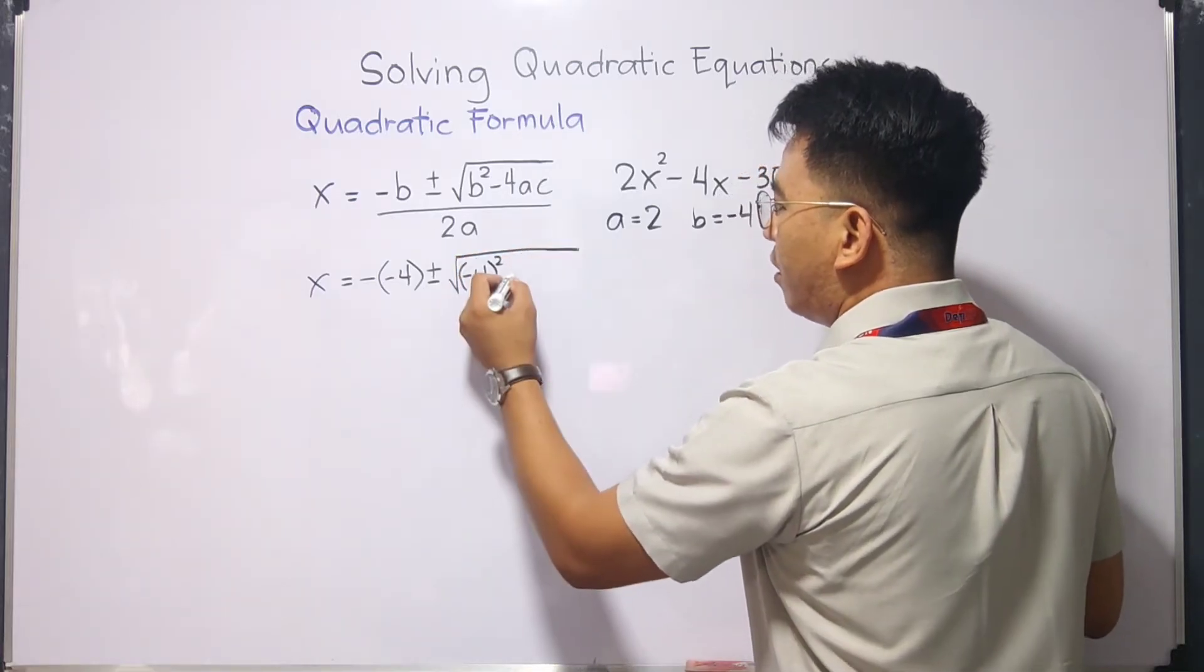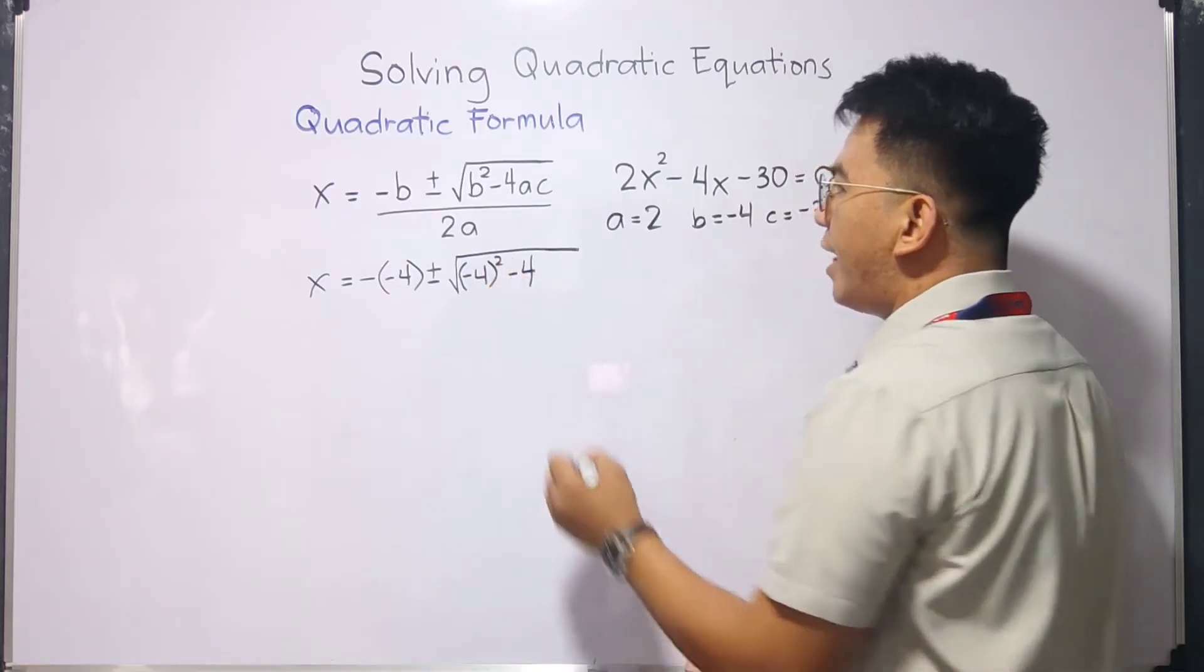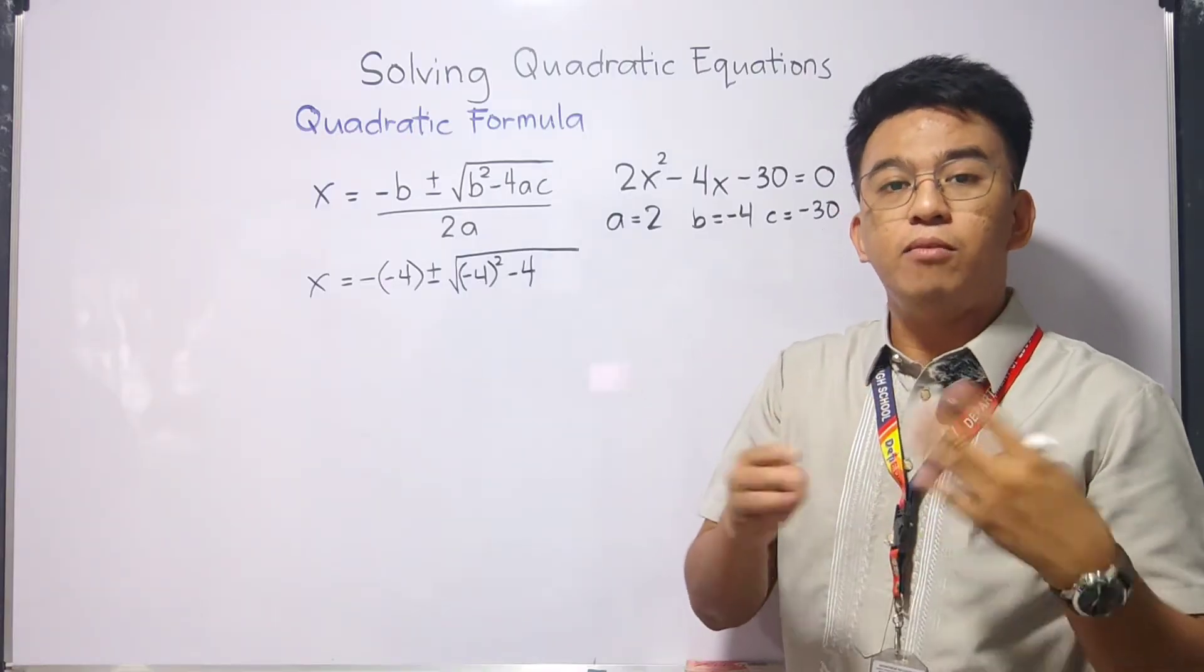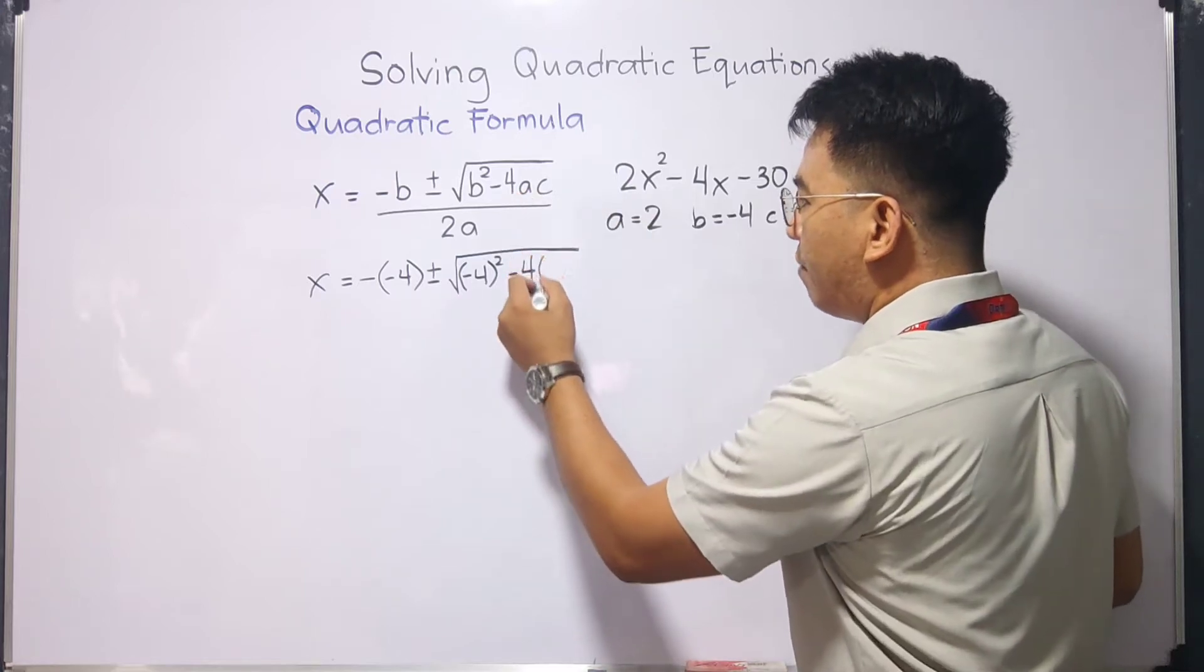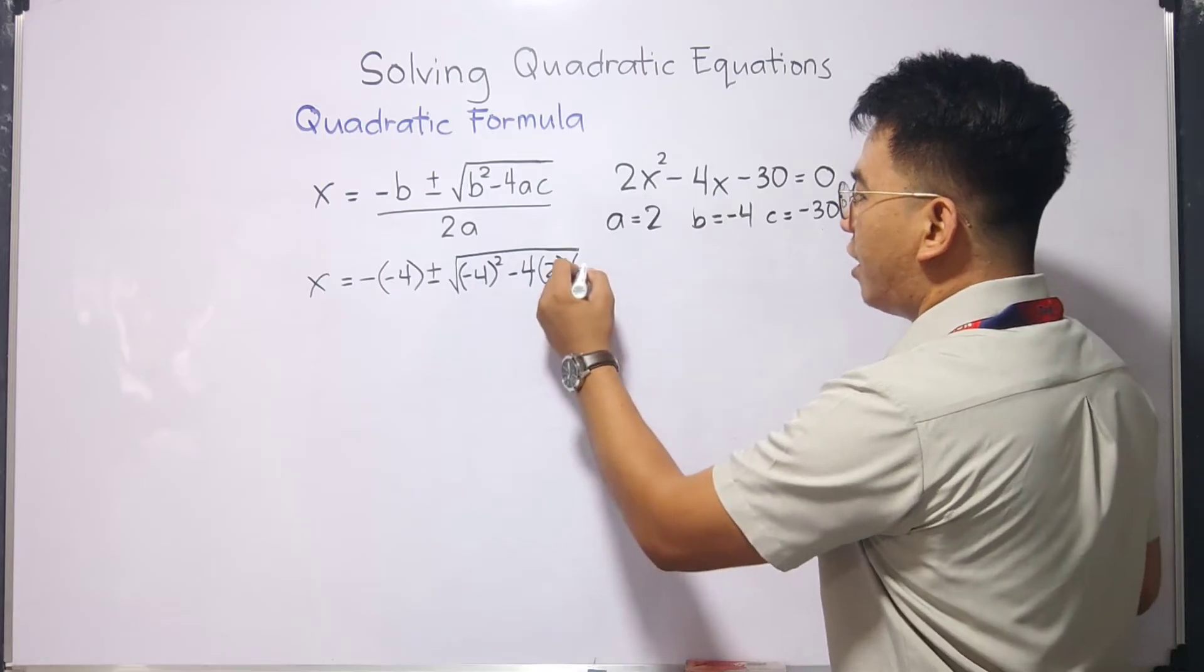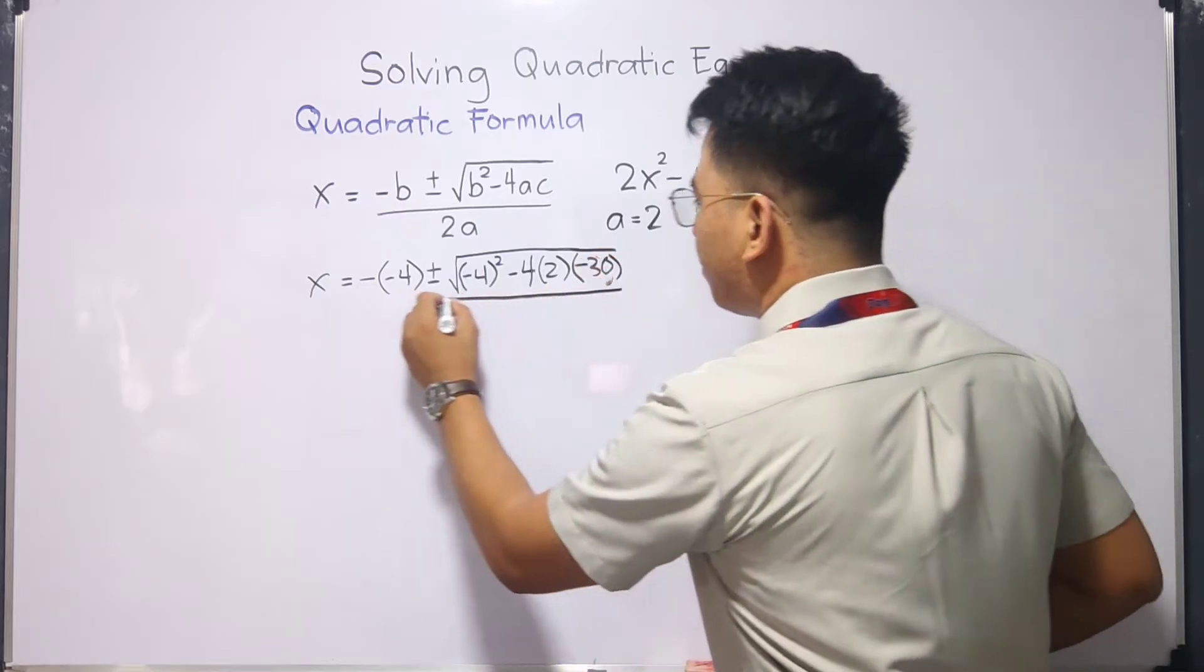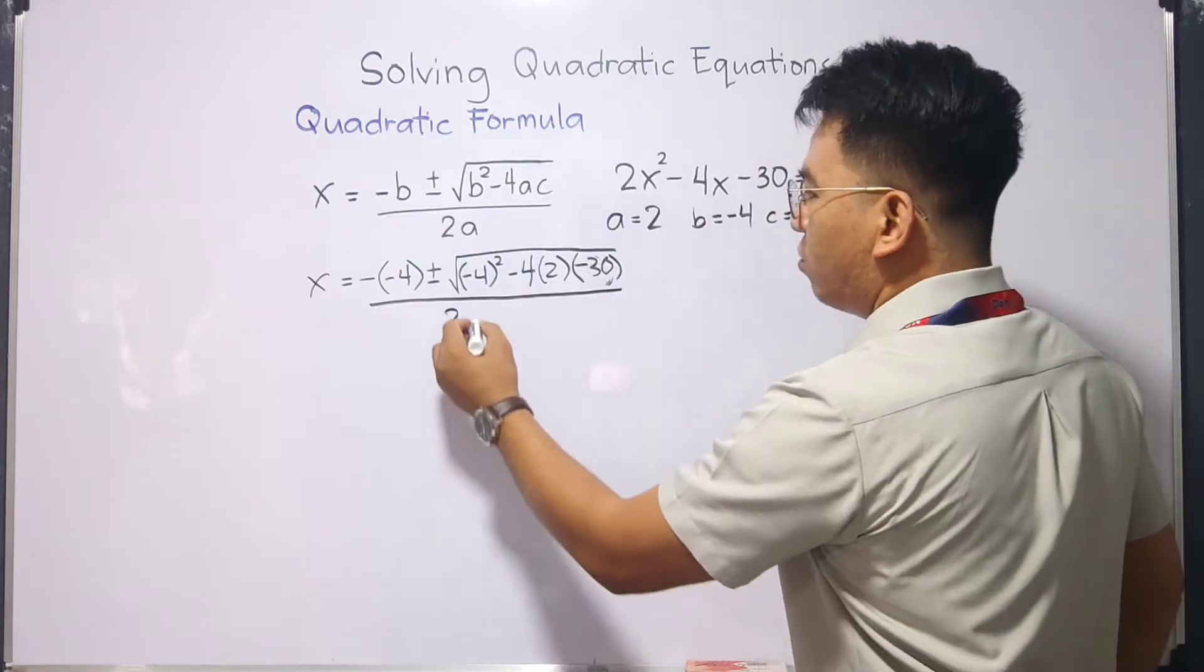And then extend that. You have 4 in your formula. Minus 4. And then, guys, for a and c and 4, you need to express it as multiplication. Your a is 2. So 4 times 2 times your c is negative 30. Over 2 times your a is 2.